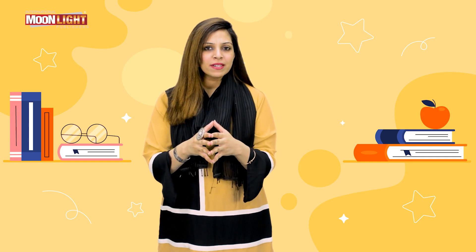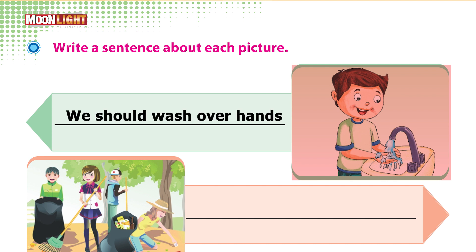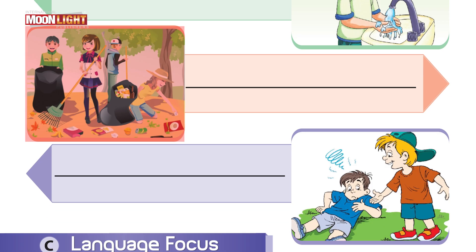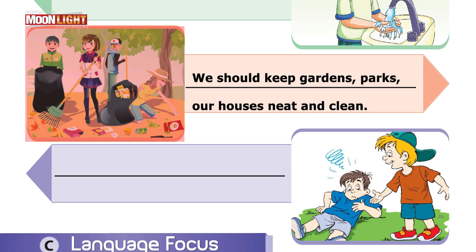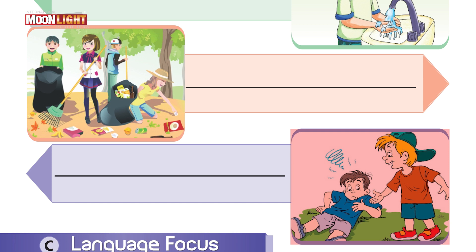Now students, you have to look at the pictures which I will show you on your screen and you have to make a sentence related to each picture. Look at this picture — we can write a sentence: we should wash our hands before and after the meal. This is the second picture and we can write: we should keep gardens, parks, or houses neat and clean. Look at the next picture — it means we should help others.